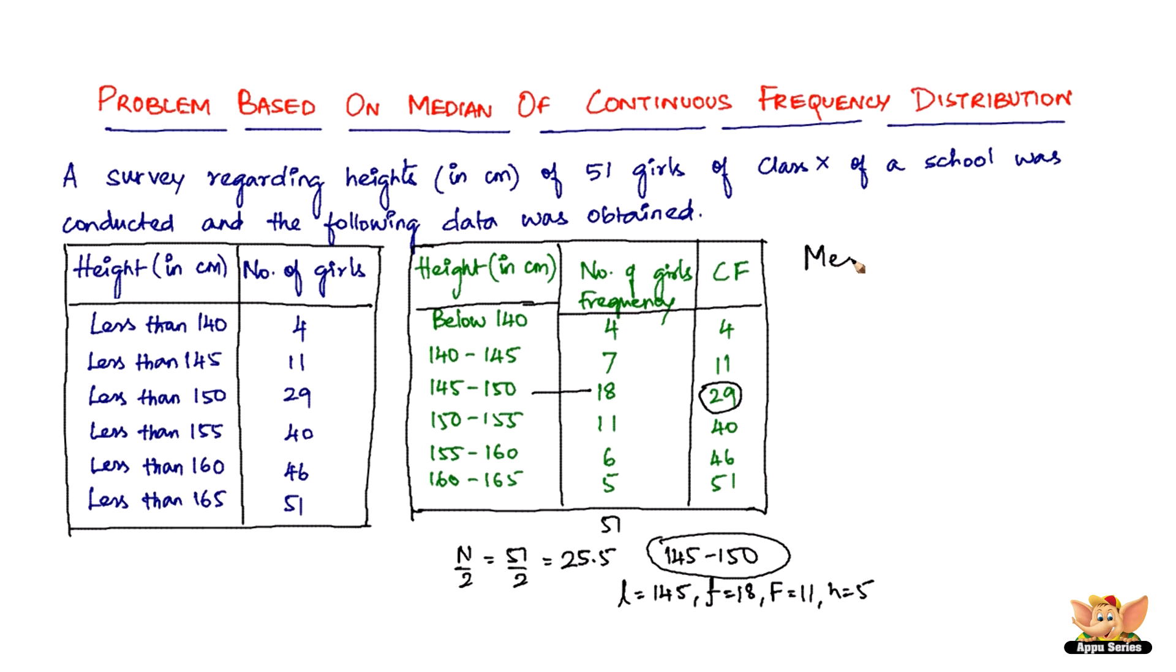So now that we've got all these data, we need to substitute all these things in the formula. Median equals small l plus n by 2 minus capital F, which is the cumulative frequency, divided by small f times h. So we've got the small l is 145 plus n by 2 is 25.5 minus the capital F, that is cumulative frequency is 11, divided by the small f which is 18 times 5. So we've got 145 plus 25.5 minus 11 is nothing but 14.5, so 14.5 times 5 divided by 18.